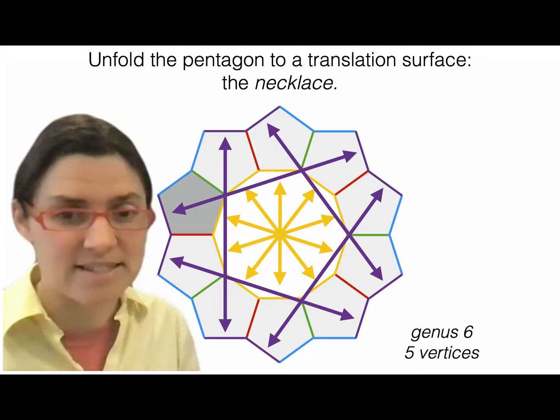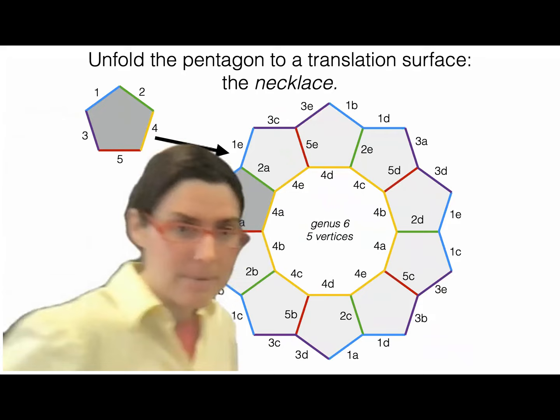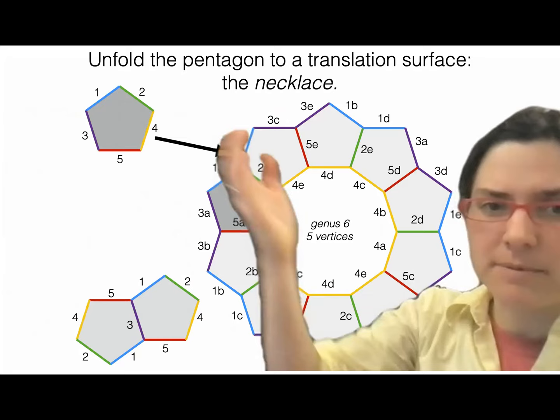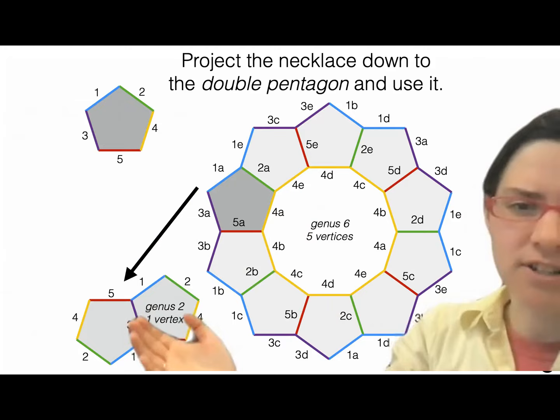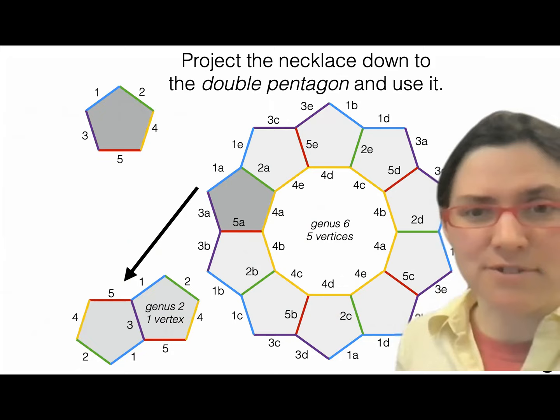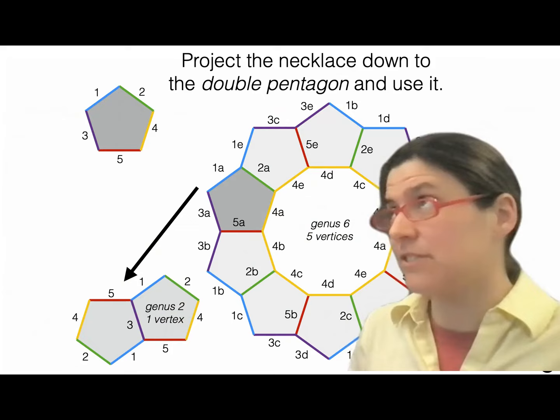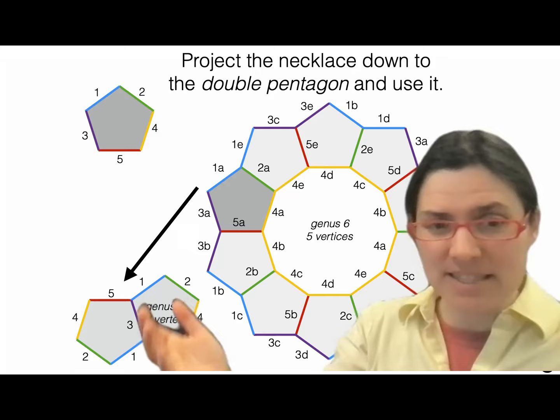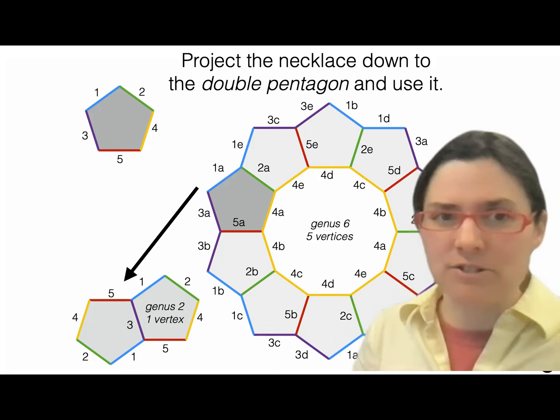This surface has genus six and five vertices — kind of complicated. But we can project down to just a simple double pentagon. We unfolded the billiard table to a big surface of 10 pentagons with genus six and five vertices, but we can project down via a five-fold cover to this little double pentagon surface. The double pentagon surface is simpler and we'll use that. As a bonus, I spent the first couple of years of my PhD working on this surface, so I was already an expert on it.